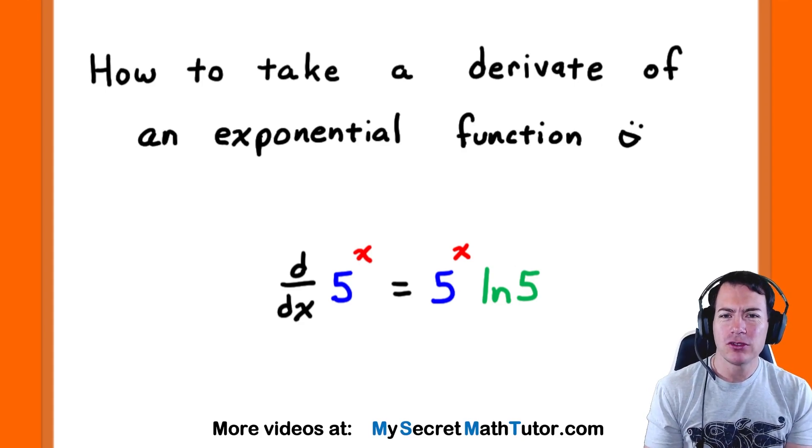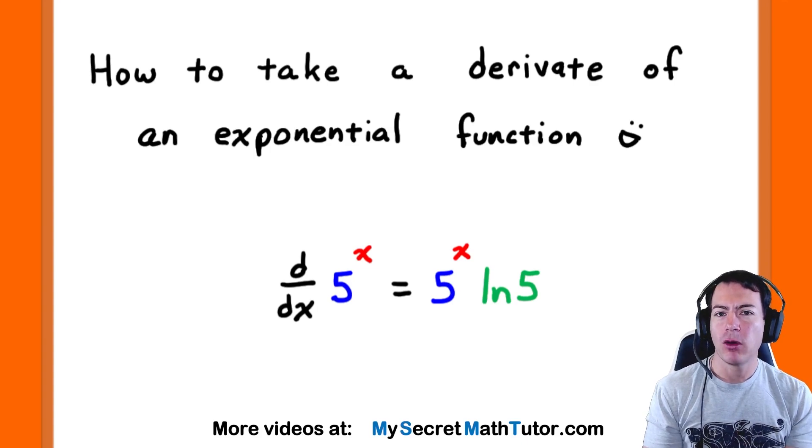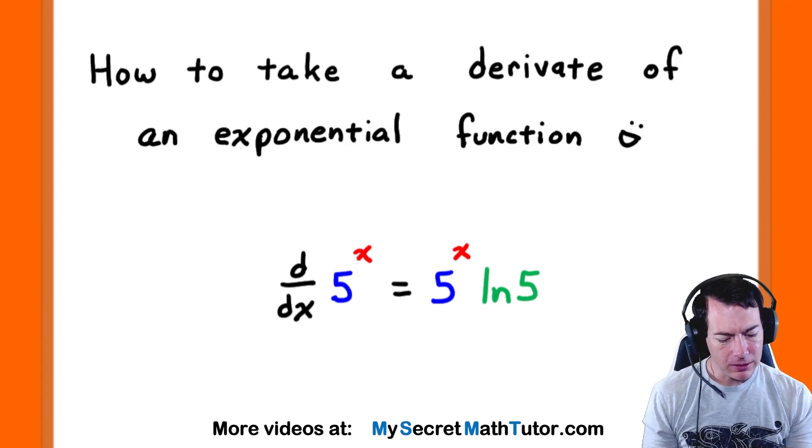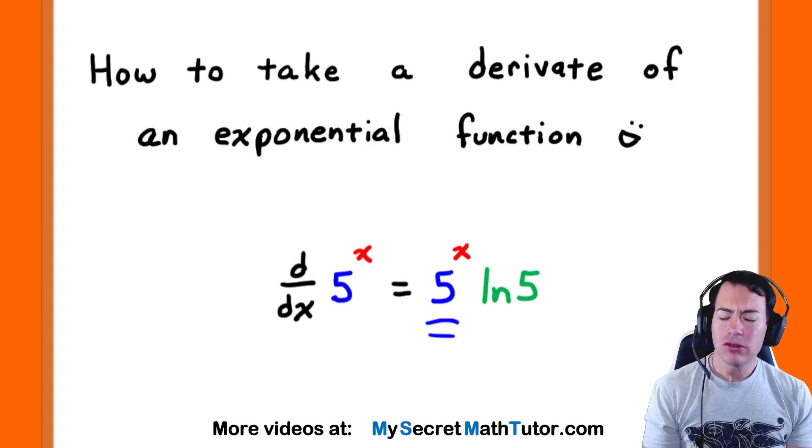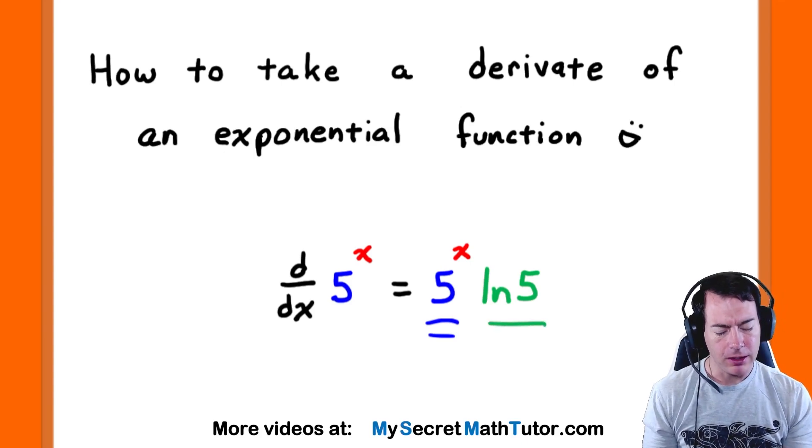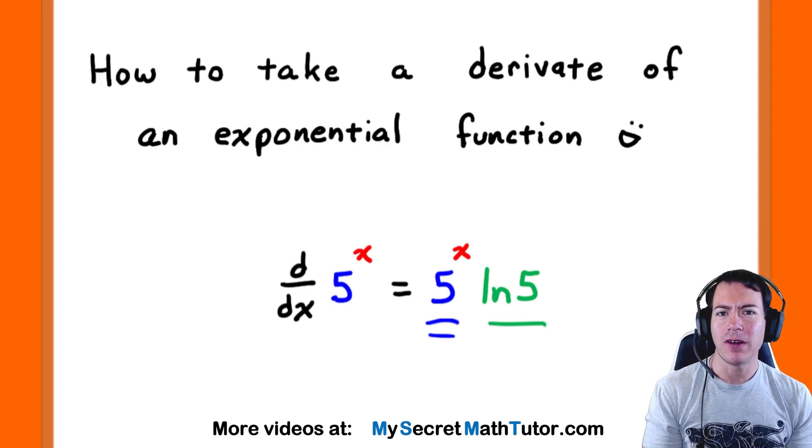As a quick example, check out where I'm taking the derivative of 5 to the power of x. You'll notice as I'm taking the derivative, we keep that 5 to the x part, and the only additional piece is actually this piece right here where we're taking the natural log of 5.